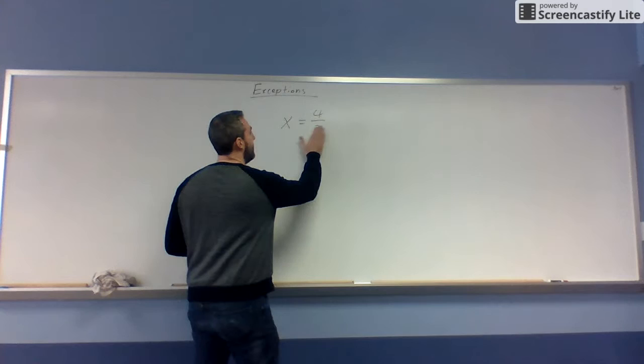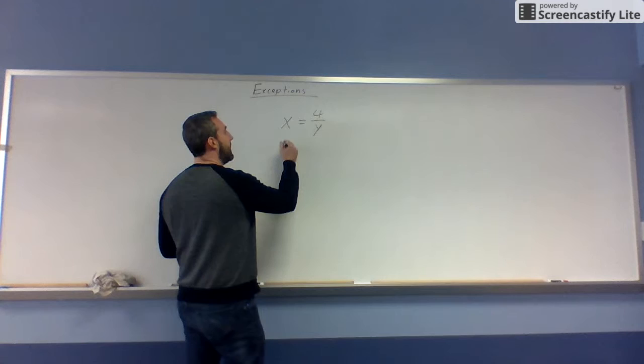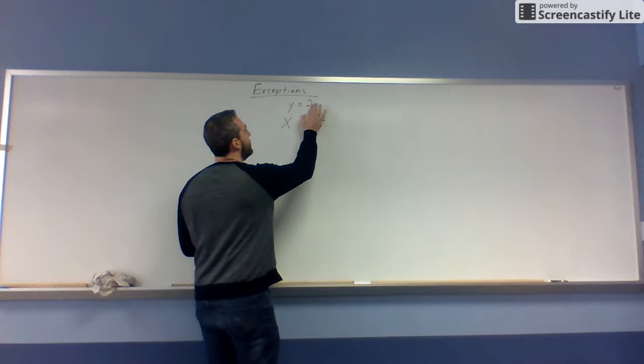If I were to ask you to solve this problem, say x is equal to 4 divided by 2, you'd say well it's 2, no problem. It's an easy problem to solve. If I were to say solve this problem, x is equal to 4 divided by y, and y happens to be 2, it's the exact same problem. Again, it's really easy.